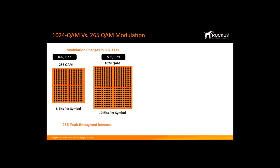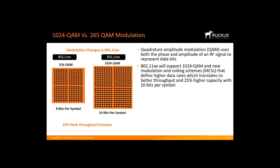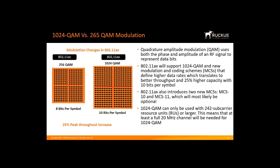Although the primary goal of 11ax is better efficiency, more speed isn't a bad thing. 11ax supports 1024 QAM — Quadrature Amplitude Modulation — using both phase and amplitude of an RF signal to represent data bits. This provides 25% higher capacity with 10 bits per symbol versus 8 bits in 256 QAM used in 11ac. 11ax also introduces two new modulation coding schemes, MCS10 and MCS11. 1024 QAM requires at least 242 subcarrier resource units (RUs), meaning a full 20 MHz channel is needed.